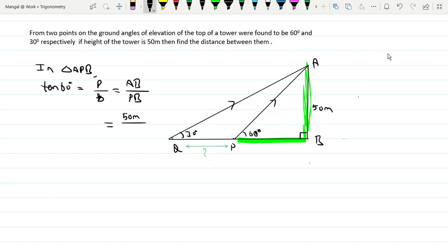The tan 60 value is root 3, which is 1.732. So PB times root 3 equals 50 meters. Therefore PB equals 50 divided by root 3, which is 50 by 1.732. Using the calculator, the answer is 28.87 meters.